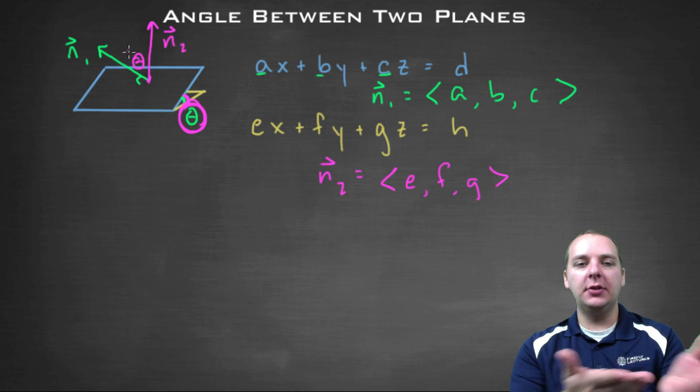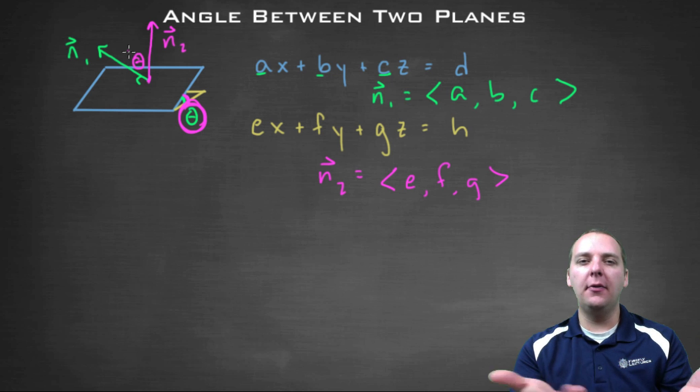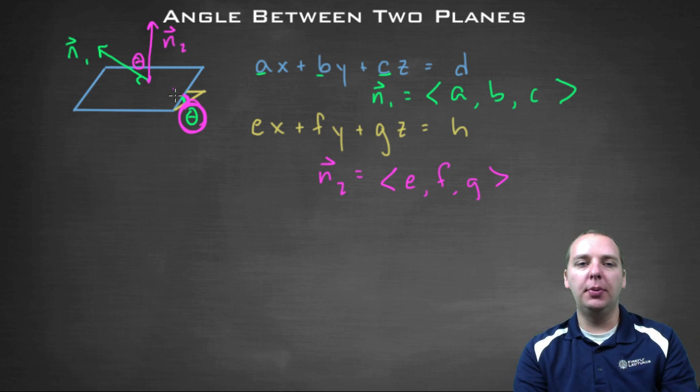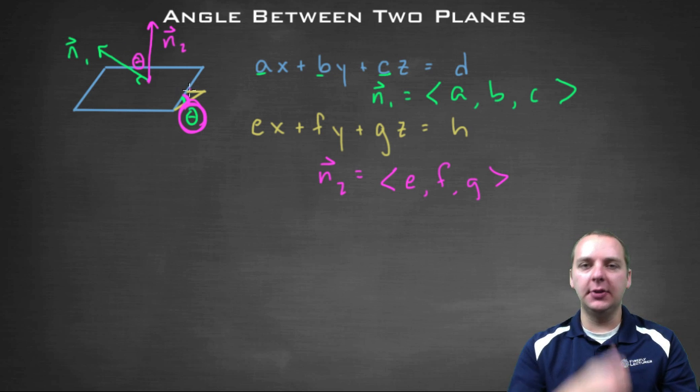And then imagine the blue and yellow planes, if that was like covers of a book. If you shut the book, if you closed the book to where the planes were parallel, N1 and N2 would be going in the same direction, and theta would be zero.